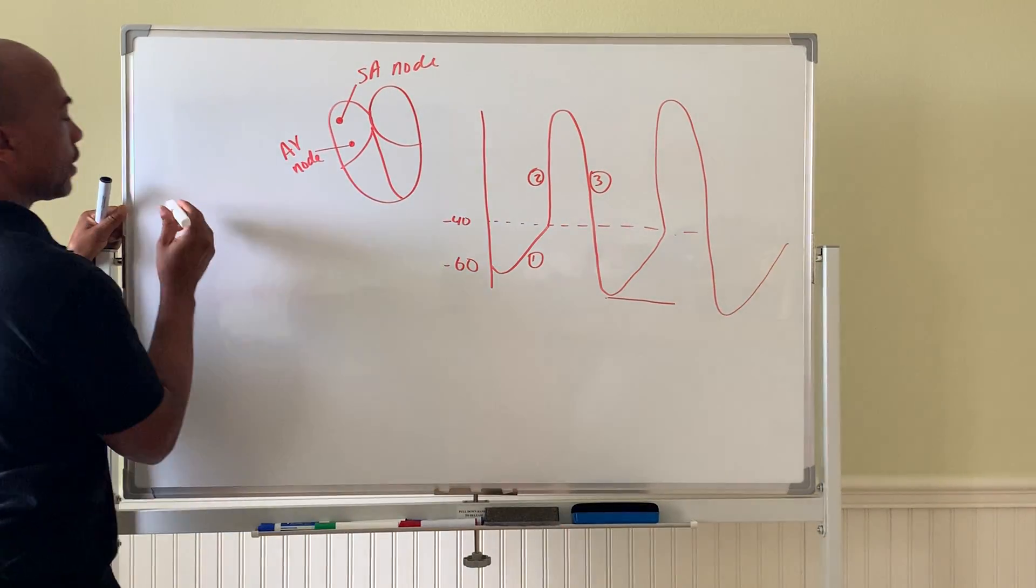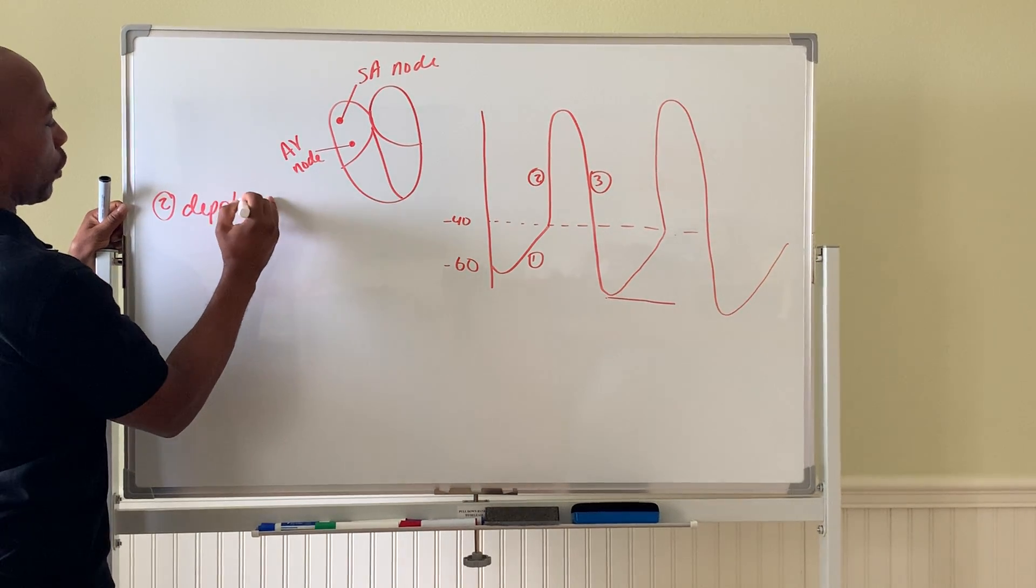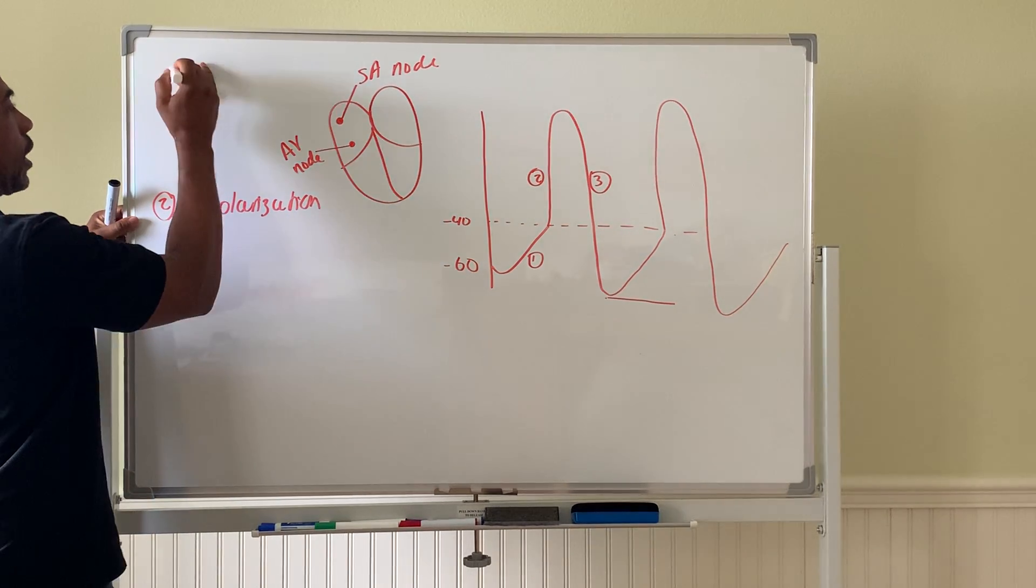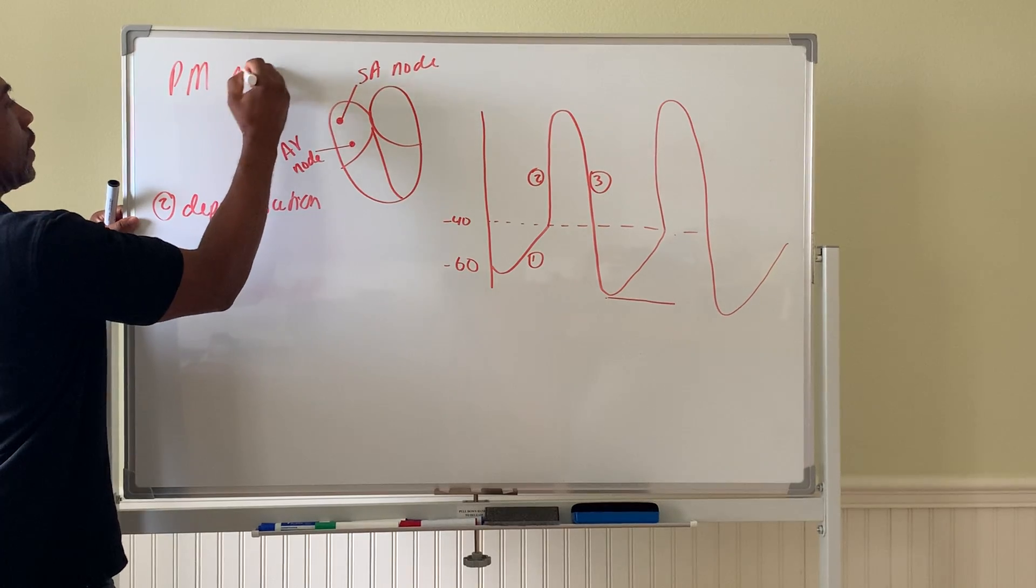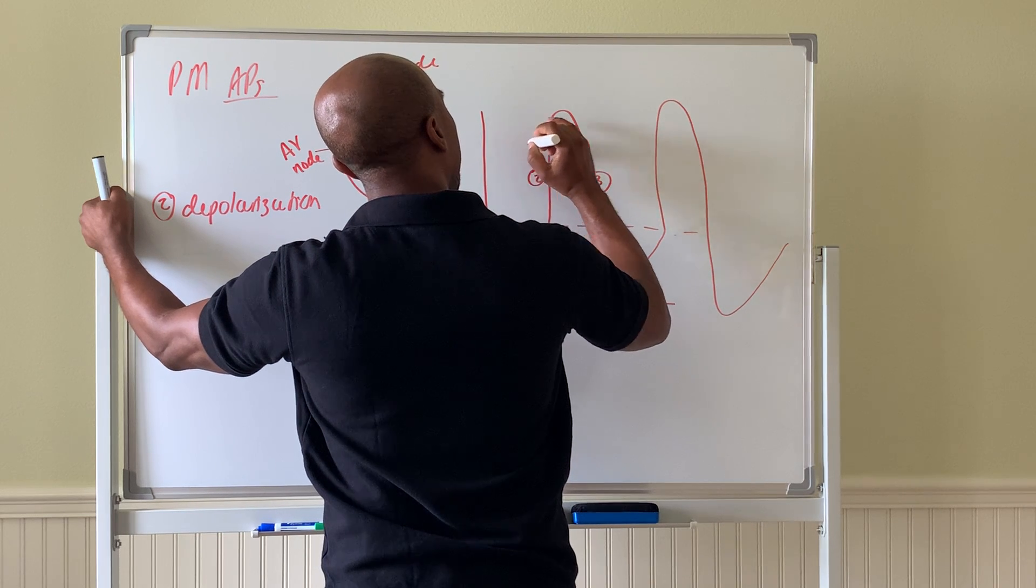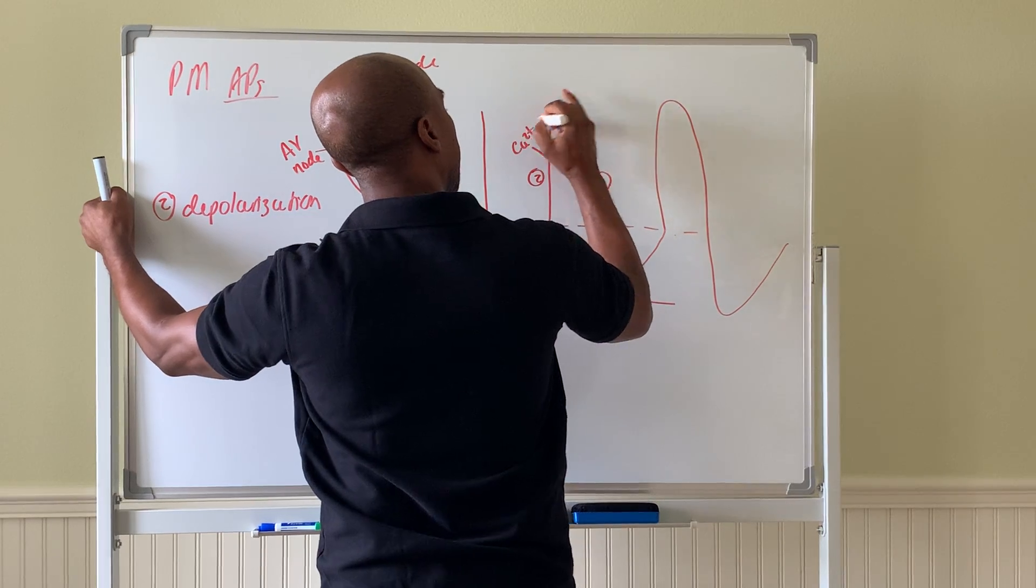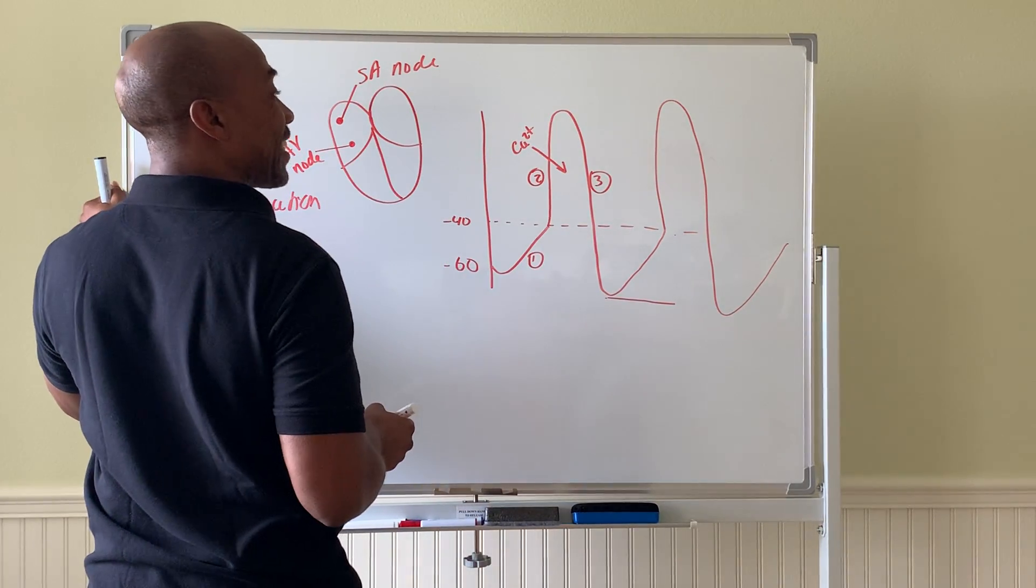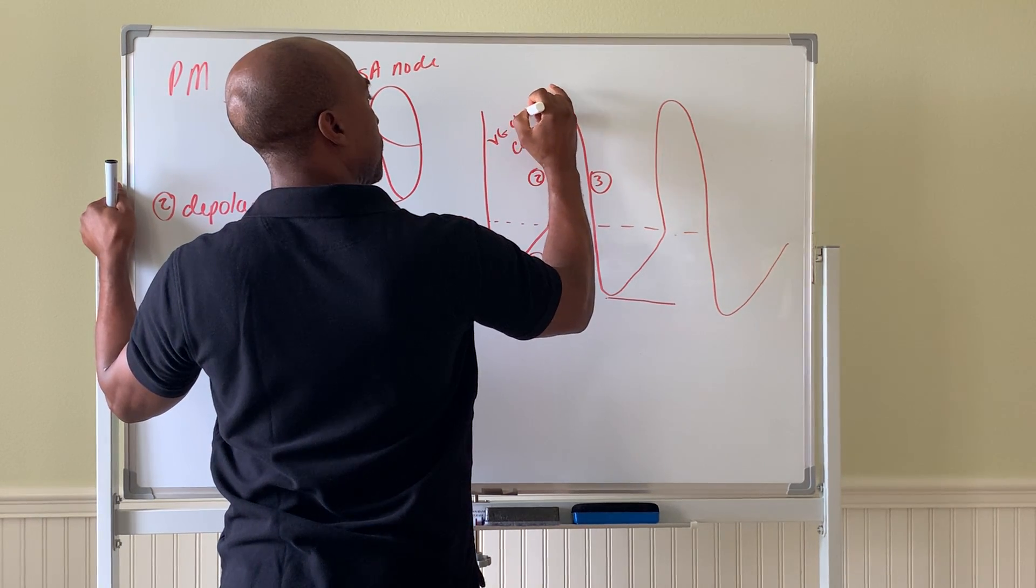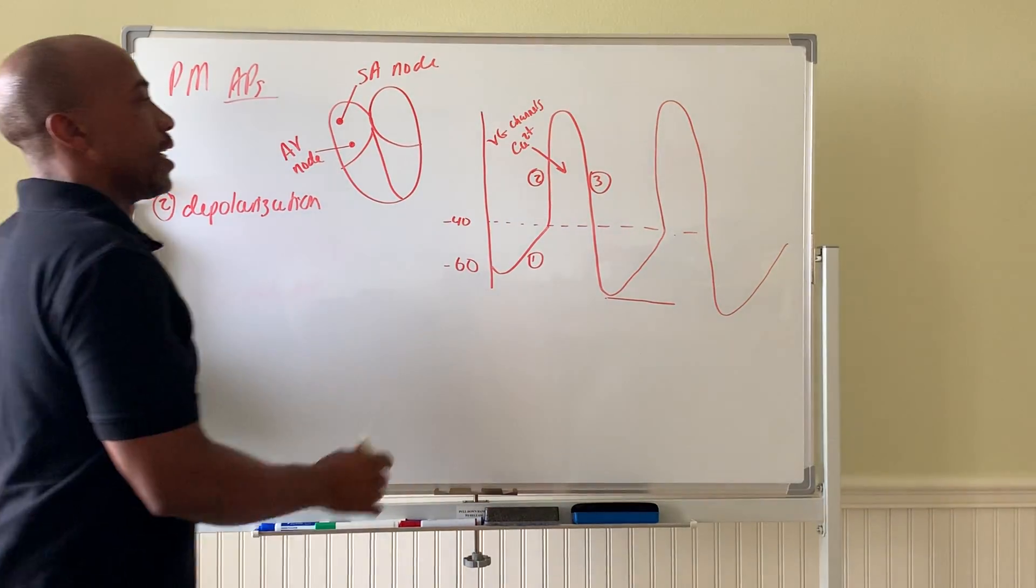Stage one, stage two is the depolarization phase of the action potential of your pacemaker cells. So this phase, phase two, is caused by influx of calcium through voltage-gated Ca²⁺ channels. So voltage-gated channels let Ca²⁺ in to create a depolarization phase.